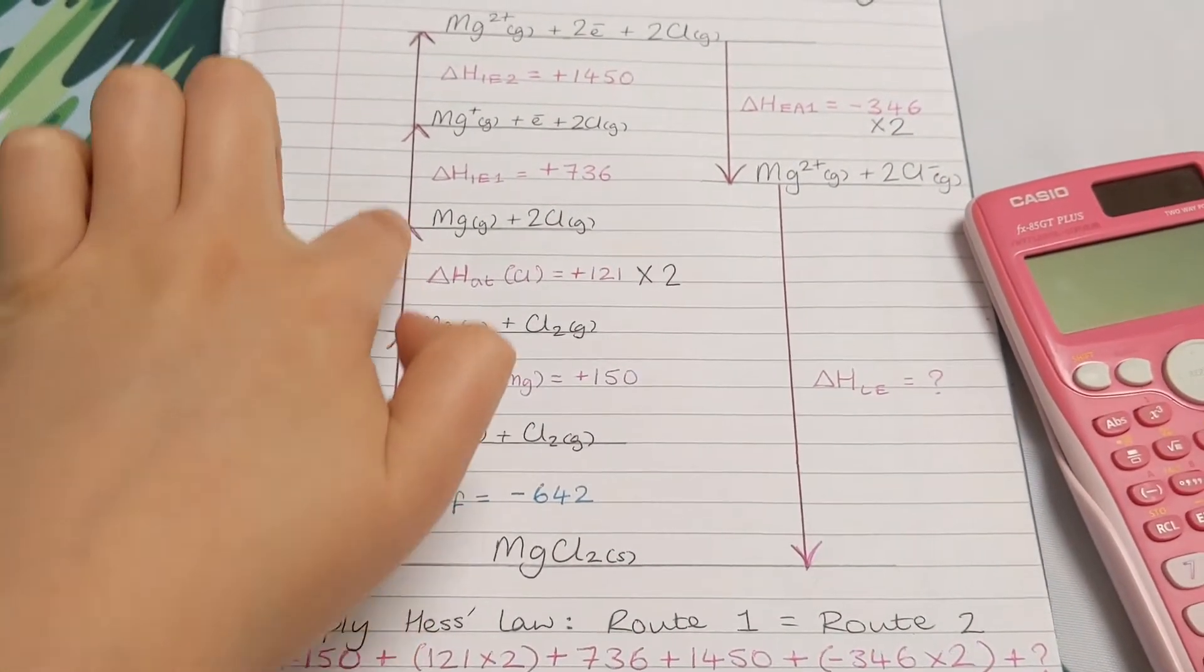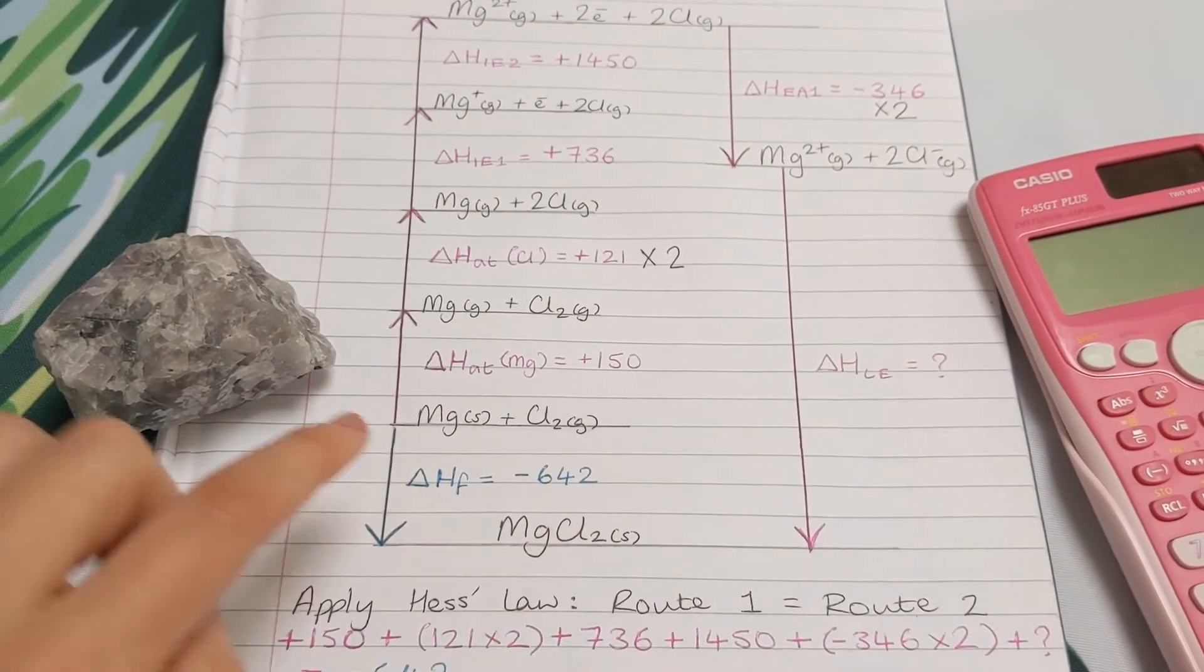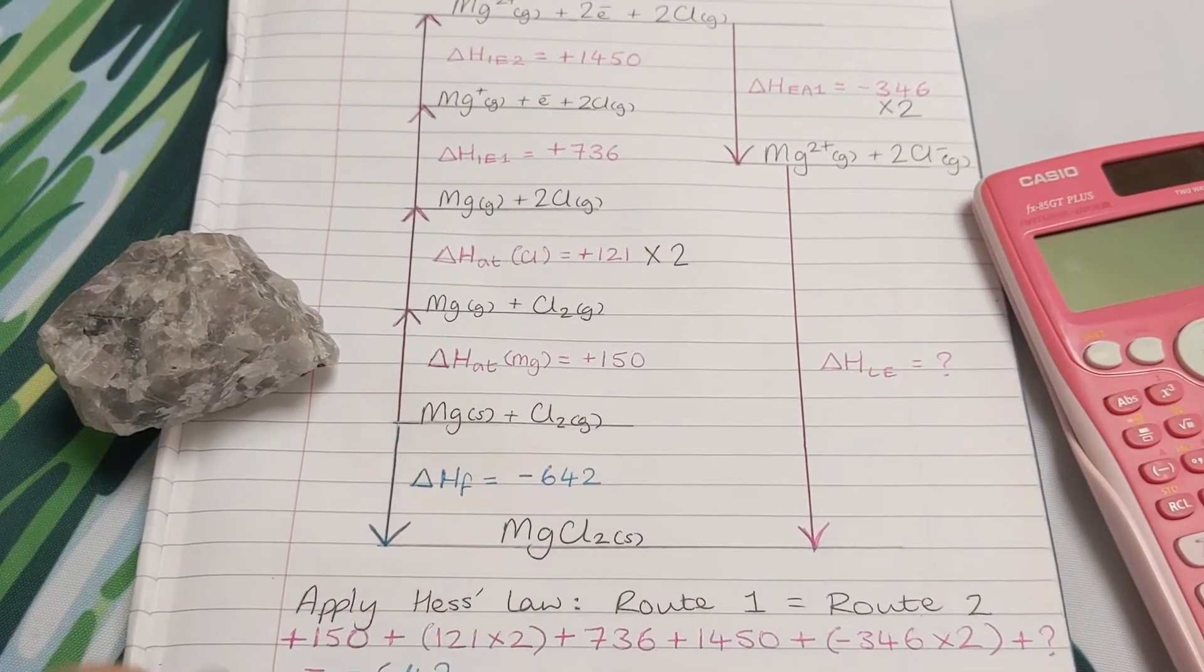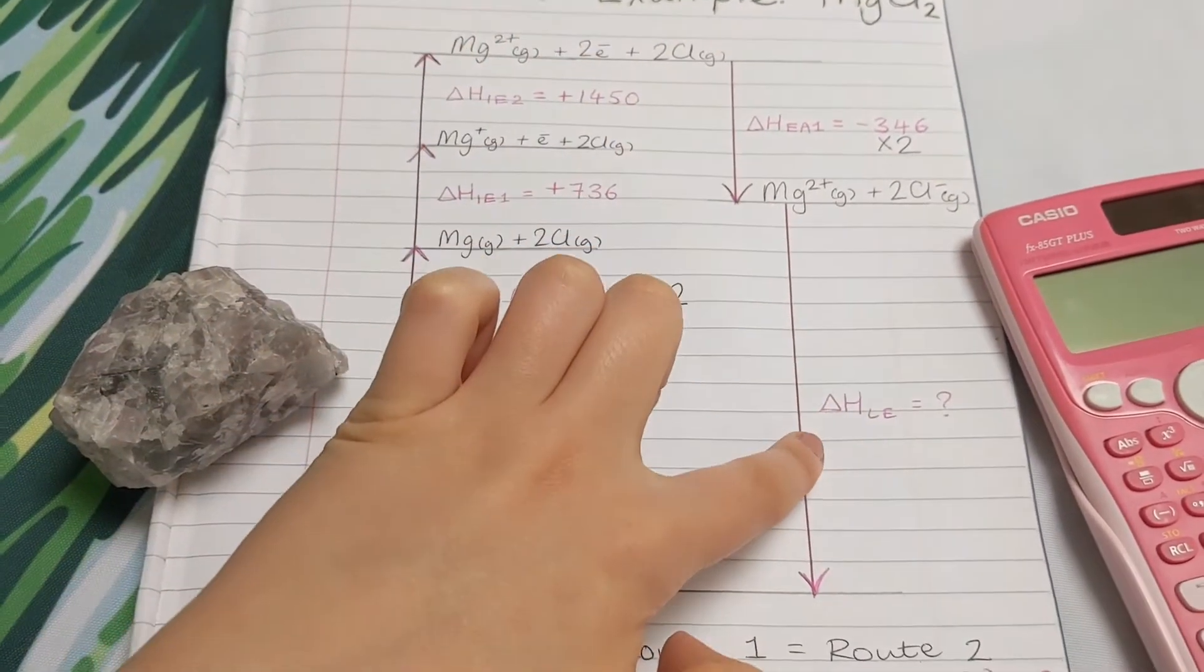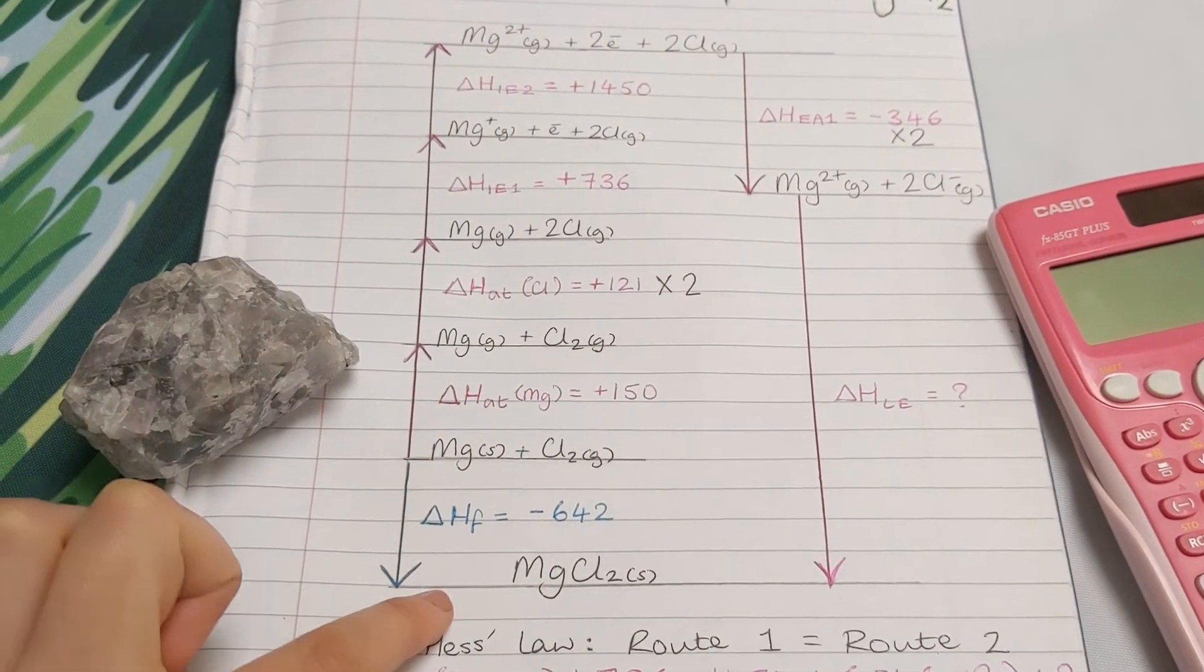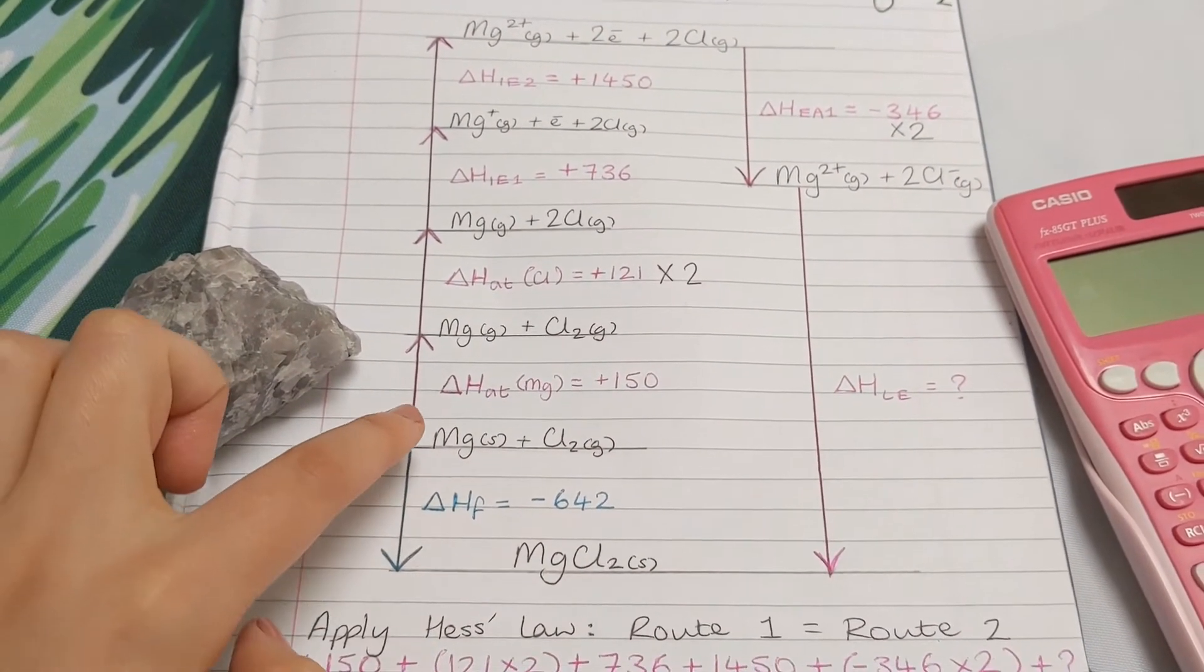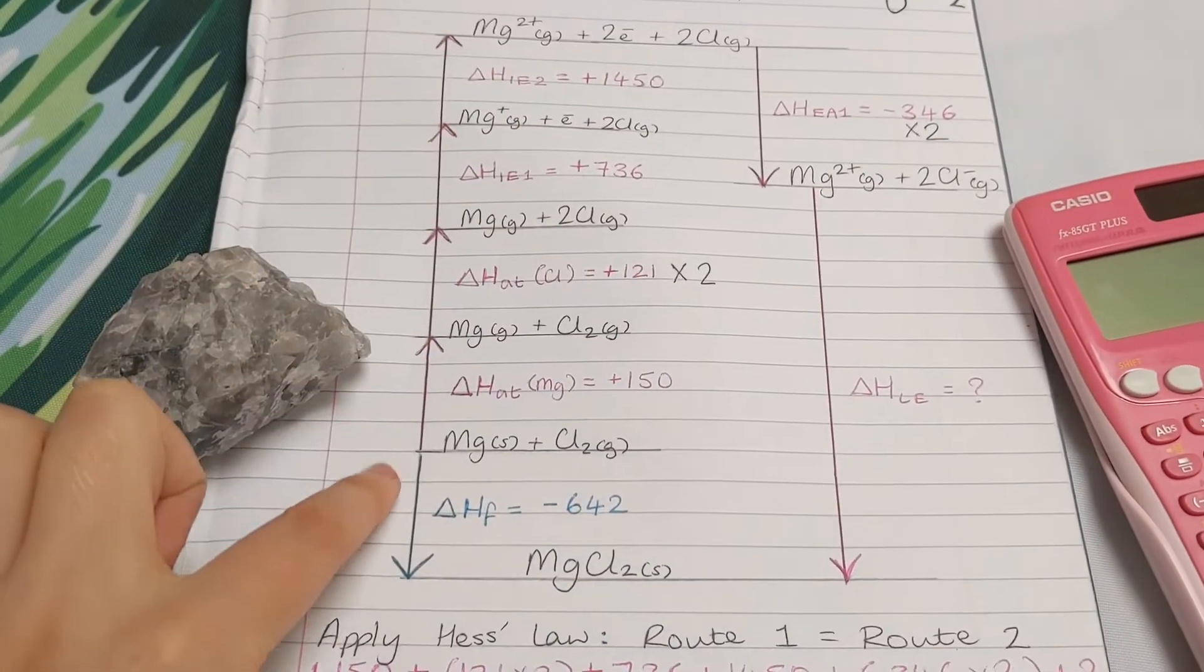So route one in the pink going clockwise is equal to route two in the blue going anti-clockwise. So the energy change needed to get from here to here is the same as the energy needed to get from here to here. There's two routes to get from this to this, go around this way or around this way.